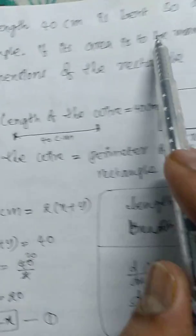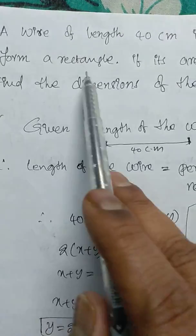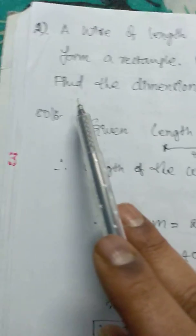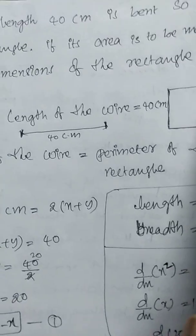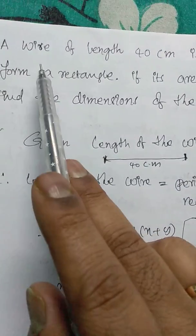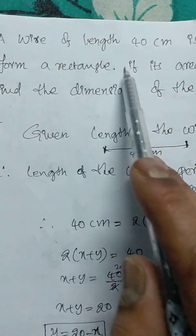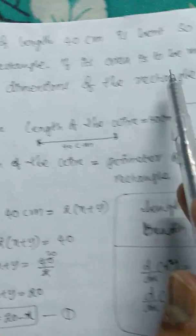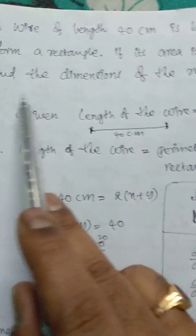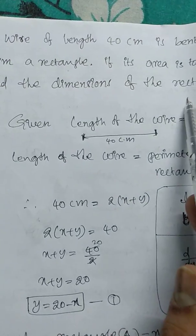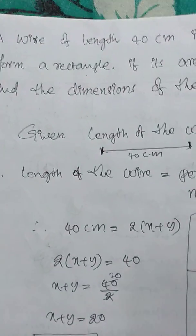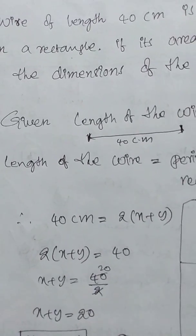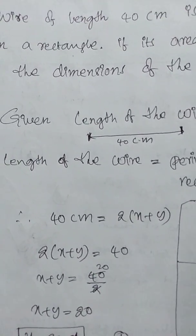A wire of length 40 cm is bent so as to form a rectangle. If its area is to be maximum, find the dimensions of the rectangle. So we have to find out the dimensions of the rectangle formed by the length of the wire.